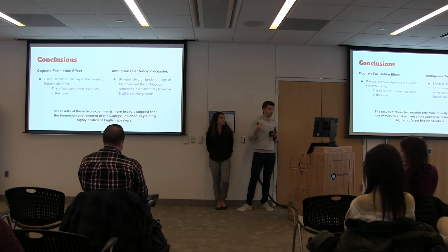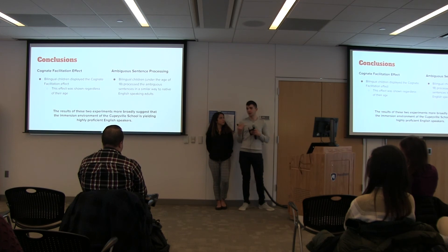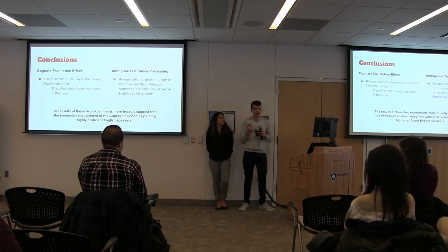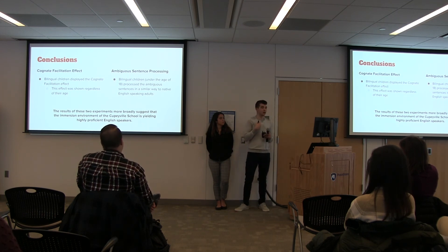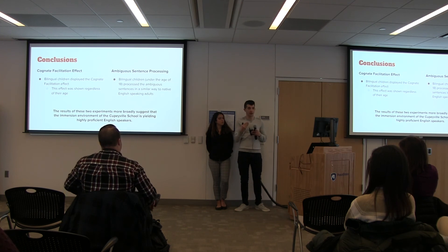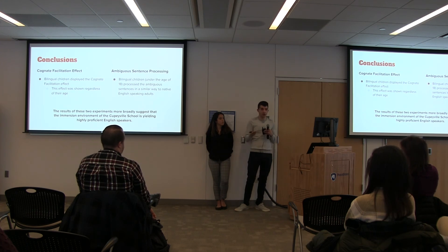In conclusion, we found that the students are presenting the cognate facilitation effect, and it was happening regardless of their age or grade. In the ambiguous sentence processing experiment, we found that the bilingual children were behaving the same way as native English speaking adults. Together, this was really important for the school and for us, because the purpose of going to that school was to see if the way they're teaching is actually yielding highly proficient English speakers — and it turns out that it is.